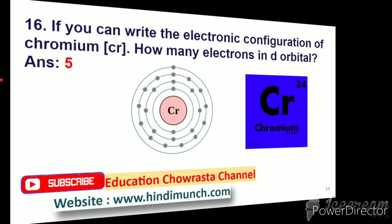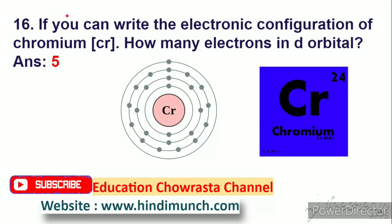Next question: write the electronic configuration of chromium — how many electrons are in the D orbital? Chromium yokkha atomic number 24. Electronic configuration raasthi D orbital lo enni electrons unttayi? Answer: 5.